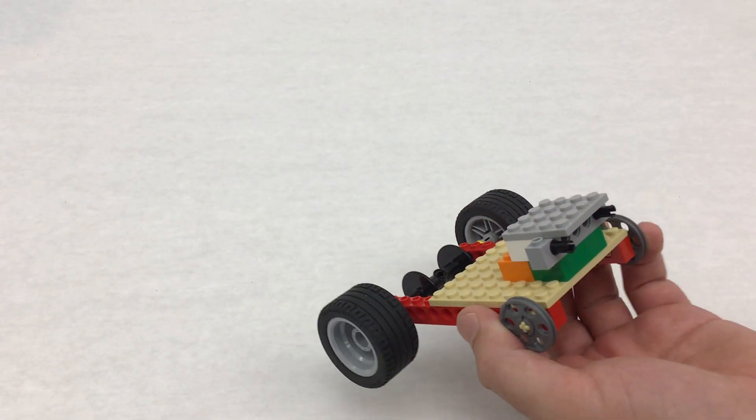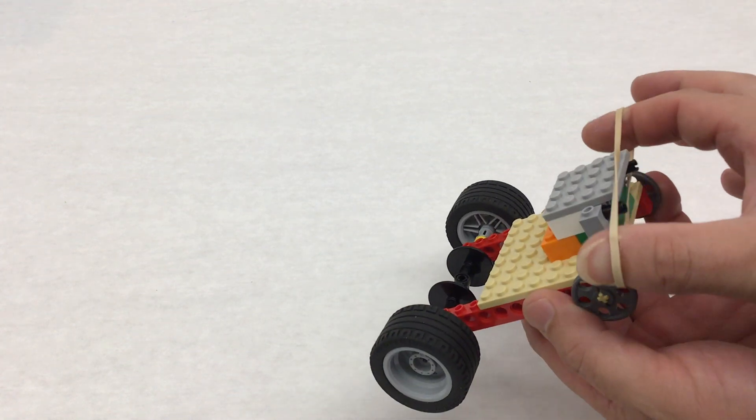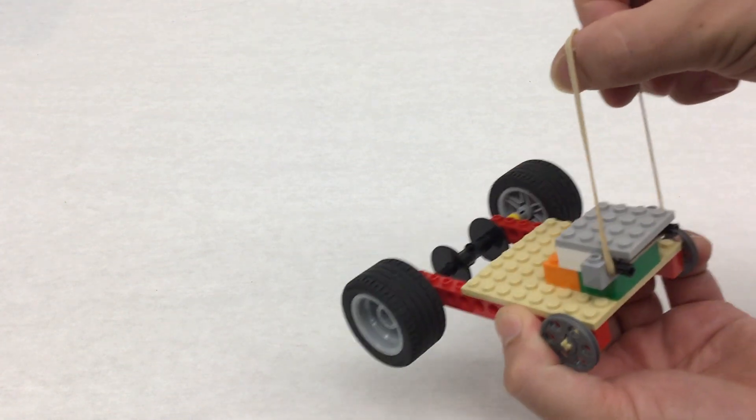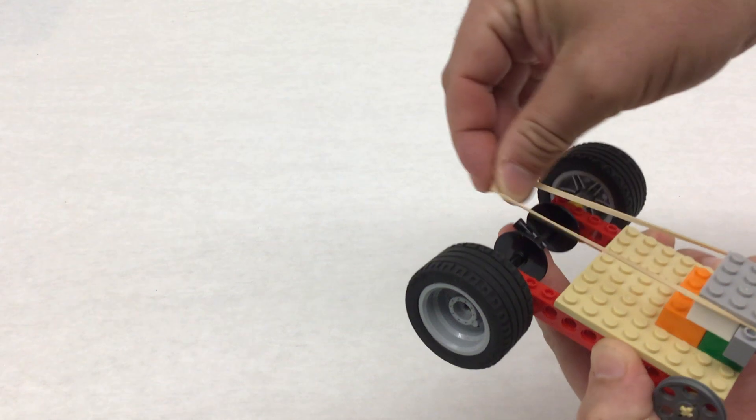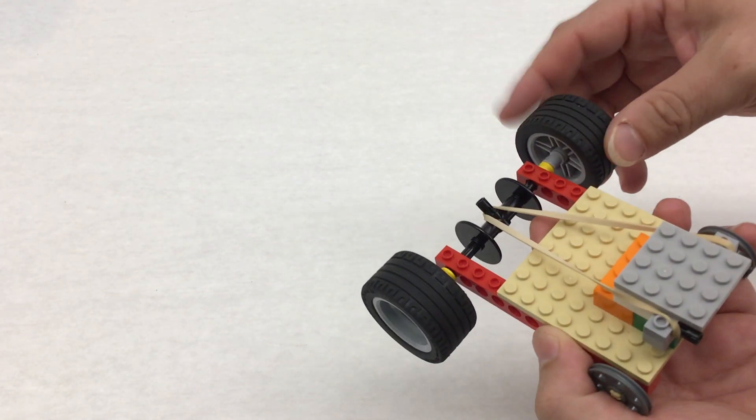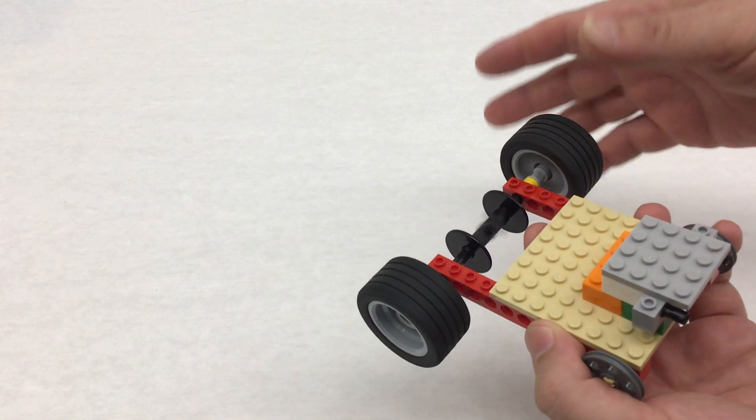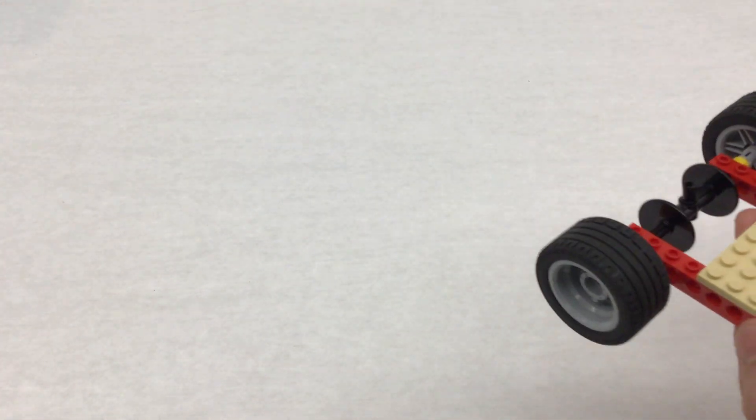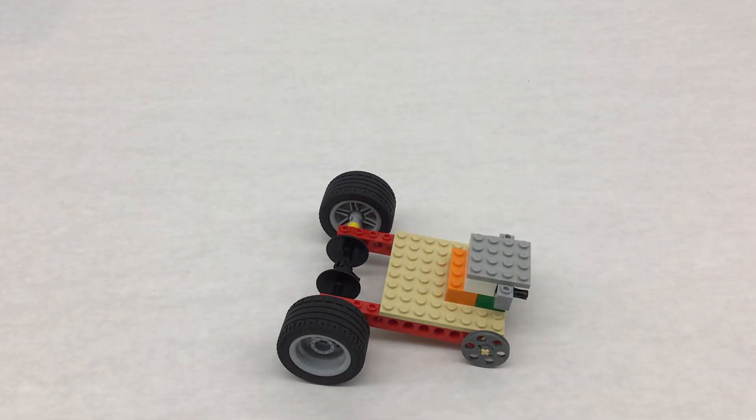So to wind up and send your Lego rubber band car, take the rubber band around the two black pins in the front, find the black pin in the back to connect it. You're going to need to hold on to the wheel. If you don't hold on to the wheel, it's going to snap that rubber band off.